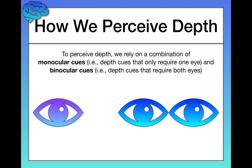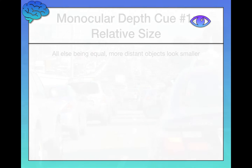There are monocular depth cues and binocular depth cues. Let's break down each of those terms. Ocular simply means eye, mono means one, and bi translates to two. So monocular depth cues are depth cues that only require one eye to see, and binocular depth cues are depth cues that require both eyes. I'm going to spend the rest of this video covering the various monocular depth cues and both of the binocular depth cues.